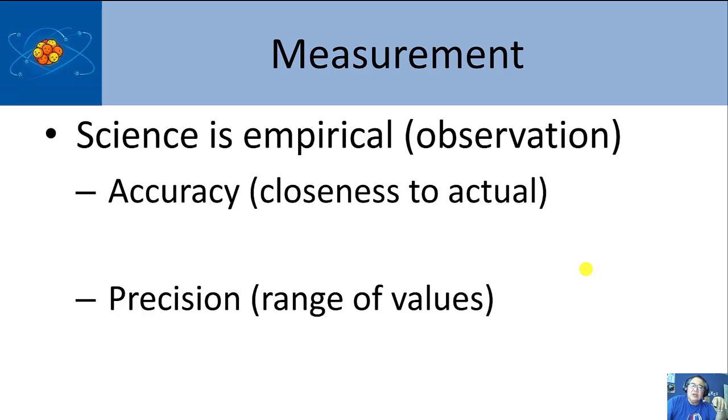Science in general is empirical. Chemistry is empirical science. There are also theoretical sciences not based on observation, but an observation would be something like a measurement. Accuracy is when a number is close to what the actual number is. The drawback to accuracy is that you may not know the actual number, so you have to make a measurement and hope that it's accurate.